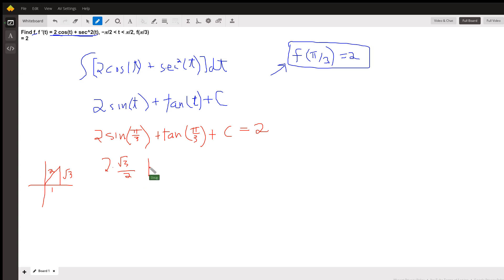The tangent of π over 3 is just radical 3 over 1. This becomes radical 3 plus radical 3, which is 2 radical 3.